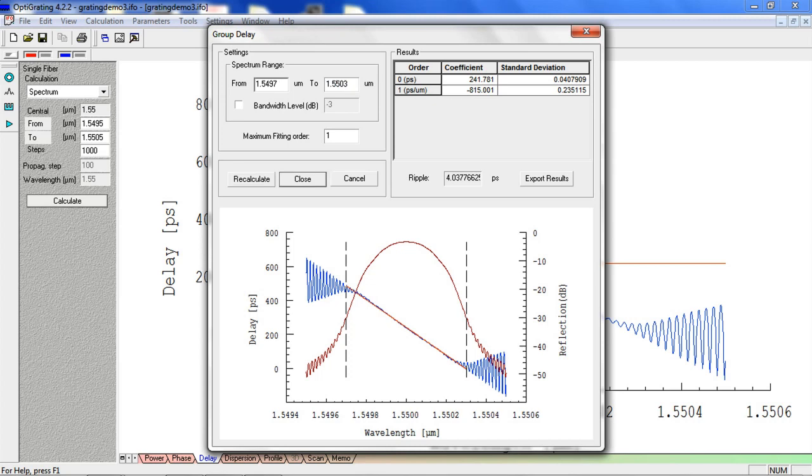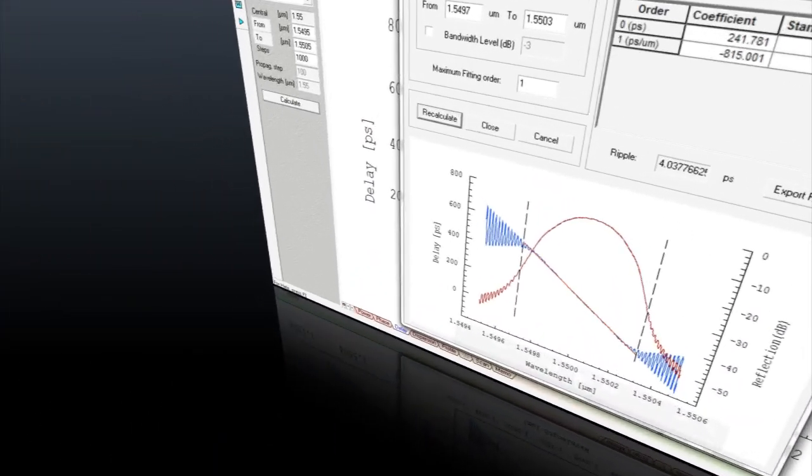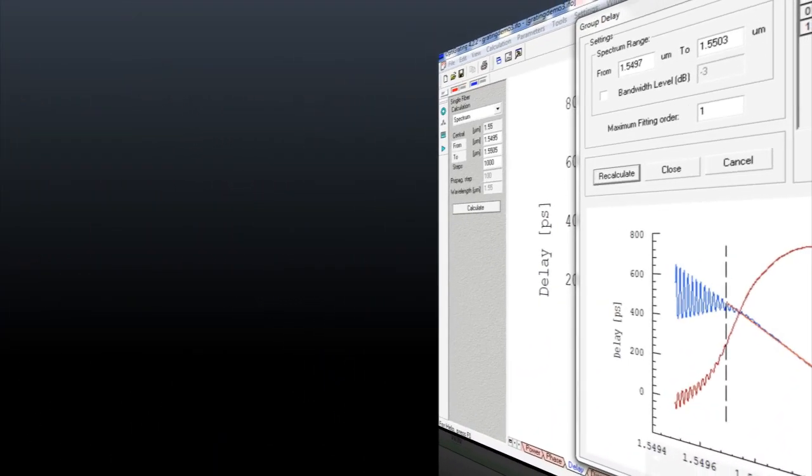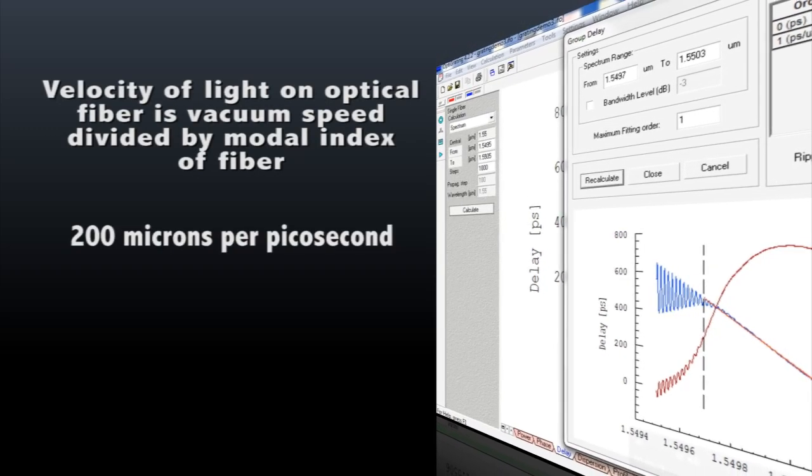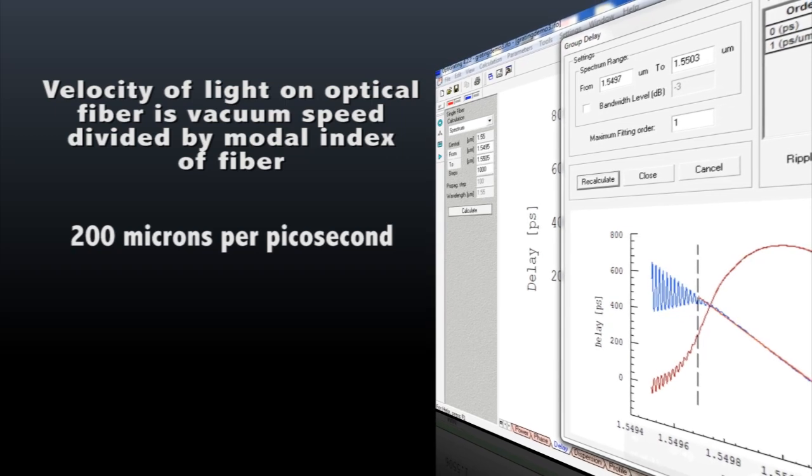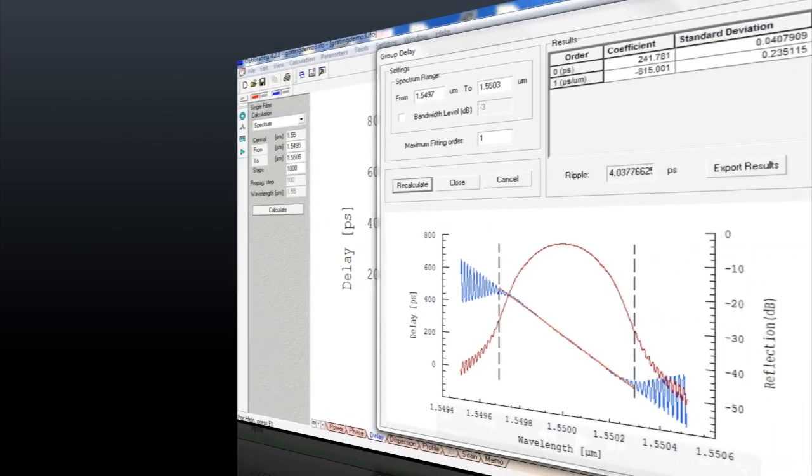We can see the shift of approximately 400 picoseconds over the bandwidth of the grating. The velocity of light in the optical fiber is the vacuum speed of light divided by the modal index of the fiber, or in this case, about 200 microns per picosecond. Therefore, in 400 picoseconds, the light will move 80,000 microns, or 8 centimeters.